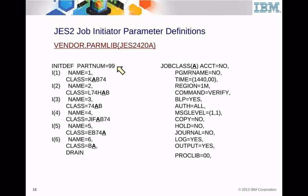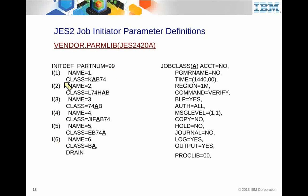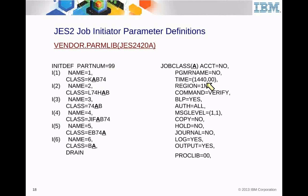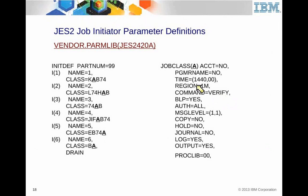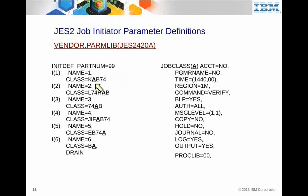Here's an example of things inside the JES parameters. You can specify up to 99 initiators. Each initiator has a number and can be assigned a class. For example, initiator number one can have class KAB74. Here's an example of a job class statement inside JES — you can limit time, permit bypass label processing, or accept slash-slash command cards. Different things in the class statement define what that class is or is not allowed to do. Different initiators can be assigned different classes.